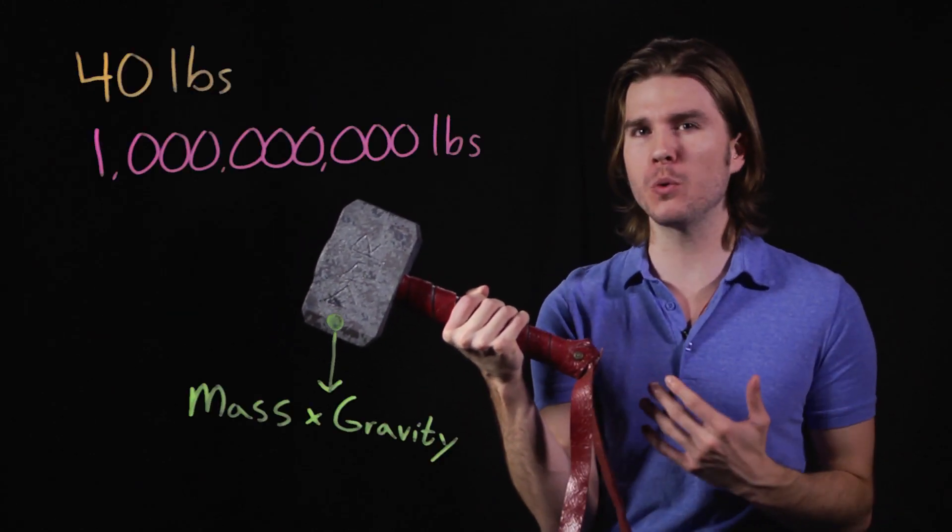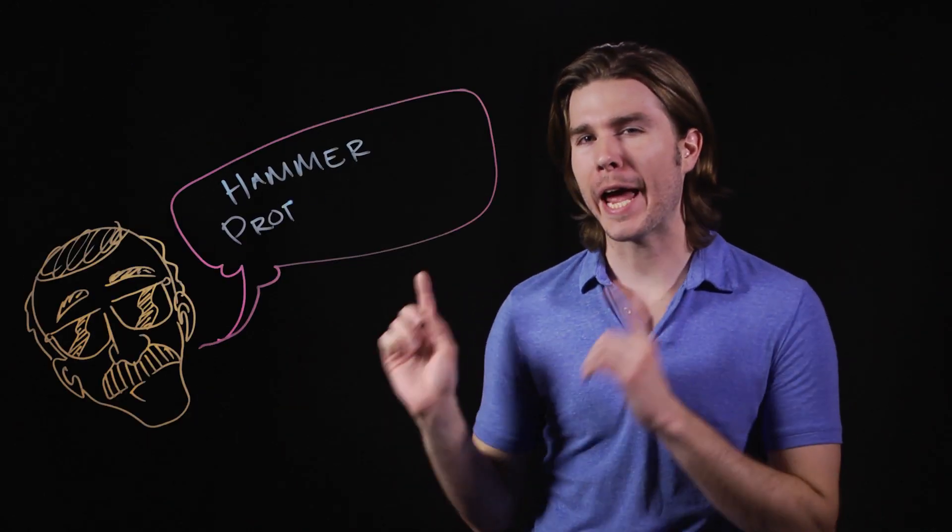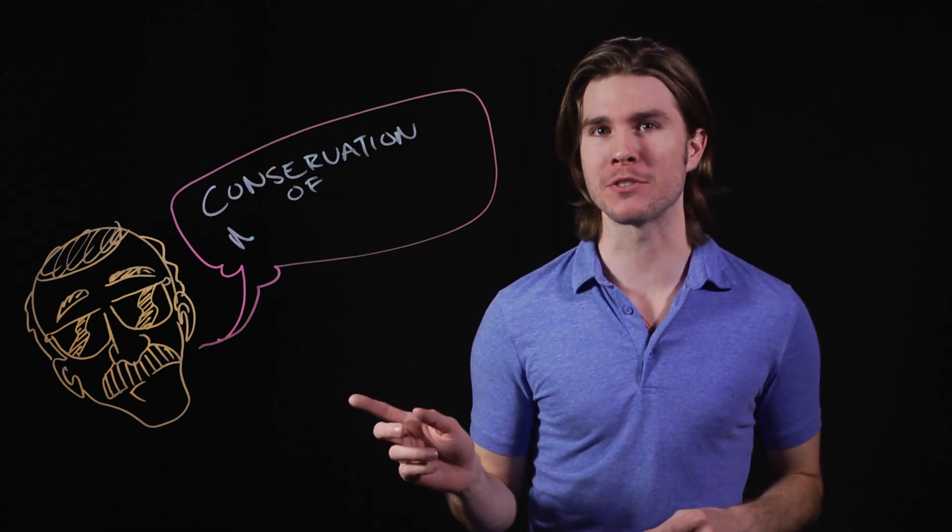Stan Lee says it's a science, but how would it work? First, the hammer. Now according to what canon you accept, Mjolnir here could weigh anywhere from 40 to a few billion pounds. So when Stan Lee says hammer propulsion, what I think he means is conservation of momentum.